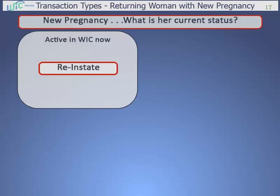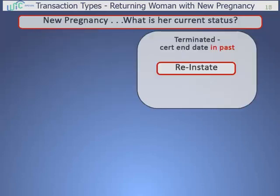To summarize, that was the process for a woman who is currently on WIC now. You simply had to reinstate her record, then her record was ready for you to complete the certification screens for her new pregnancy and issue her benefits. Next, let's talk about a woman who was on WIC before, she's been terminated, and her cert end date is in the past.